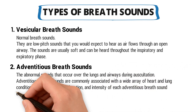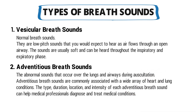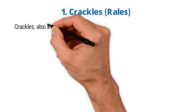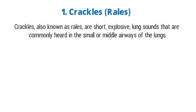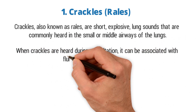Adventitious breath sounds are commonly associated with a wide array of heart and lung conditions. The type, duration, location, and intensity of each adventitious breath sound can help medical professionals diagnose and treat medical conditions. This is why knowing the difference between each type of abnormal breath sound is so important. First and foremost, we have crackles — also known as rales — these are short explosive lung sounds that are commonly heard as air moves through secretions in the small or middle airways of the lungs.